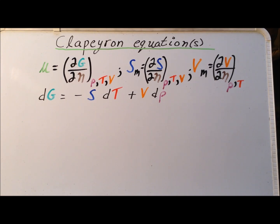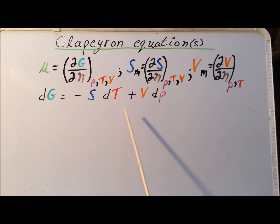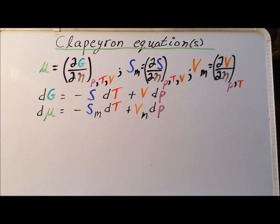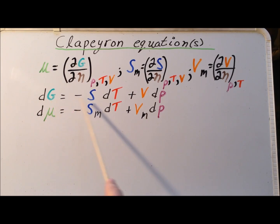We recall the expression that we derived for the differential of the Gibbs energy, dG, which is minus S dT, where S is the entropy, T is the temperature, plus V dP, V being the volume and P being the pressure. In the next step, we are simply going to take the derivative with respect to the number of moles of material, d/dN. This gives that d mu is equal to minus S sub M dT plus V sub M dP — that is, replacing G, S, and V by their partial molar quantities.